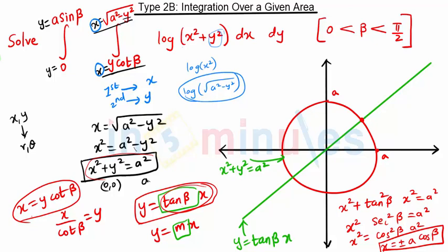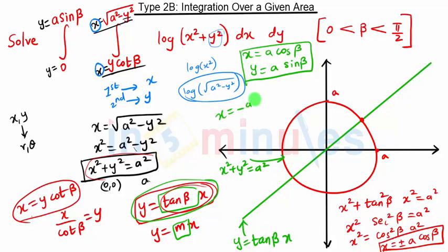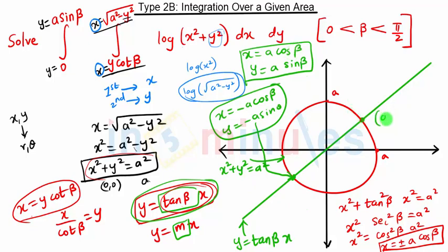For each value of x there is a corresponding value of y. When we put x equals a·cos(beta) into the line equation, we get y equals a·sin(beta), since tan(beta) is sin(beta)/cos(beta) and the cos(beta) terms cancel. So one intersection point is (a·cos(beta), a·sin(beta)). When x equals minus a·cos(beta), we get y equals minus a·sin(beta), which is the point in the third quadrant. The y limit goes from zero to a·sin(beta), confirming our region of interest. We will now convert the Cartesian coordinates into polar coordinates.